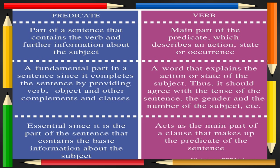Predicate — let's recap. A predicate is a part of a sentence that contains the verb and further information about the subject. It is a fundamental part of a sentence since it completes the sentence by providing the verb, object, and other complements and clauses. A predicate is essential since it is the part of the sentence that contains the basic information about the subject. The verb is the main part of the predicate, which describes an action, state, or occurrence — a word that explains the action or state of the subject. Thus, it should agree with the tense of the sentence, the gender, and the number of the subjects. A verb also acts as the main part of a clause that makes up the predicate of the sentence.